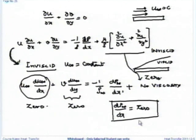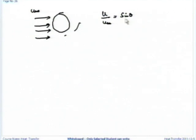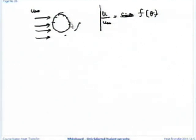If you take flow around a cylinder, U-infinity is not constant. You will get U by U-infinity as some function of theta, meaning U is not constant anymore — it is a function of location. Then in that case dp by dx is not equal to 0.